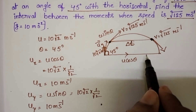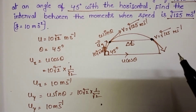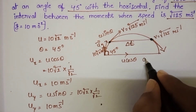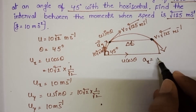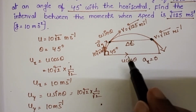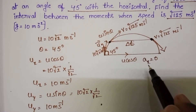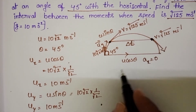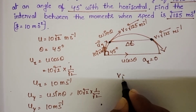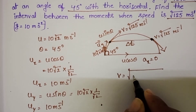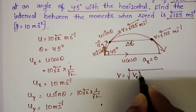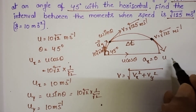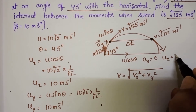Along the horizontal direction, velocity remains constant because there is no external force acting along the horizontal direction, so acceleration is 0. Along the vertical direction, acceleration due to gravity acts always in the downward direction. The final velocity is v = √(vx² + vy²), and since acceleration along x is 0, ux = vx.